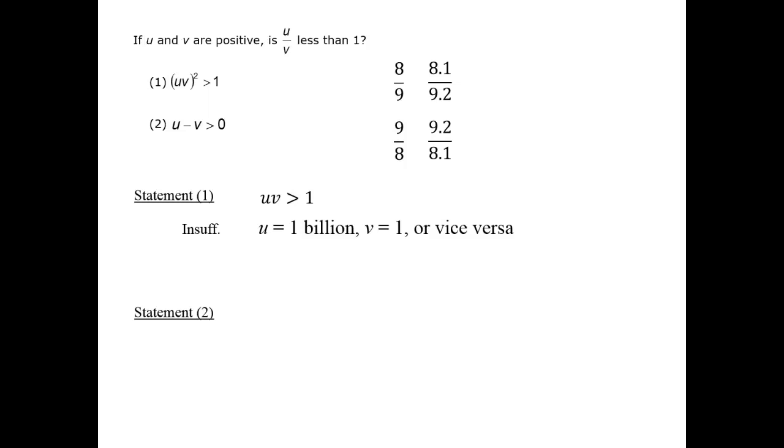If we add v to both sides of this statement, then we obtain u is greater than v. So, we have data that u is larger than v, and that means that u over v will always be greater than 1. Therefore, we have information to answer the question definitively, and statement 2 is sufficient. The correct answer is B.